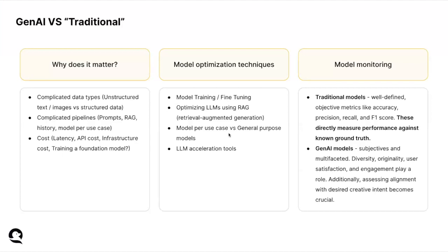There are also differences in model optimization techniques. With traditional models, you usually train from scratch or fine-tune a pre-trained model. With generative models, it changes — you can train or fine-tune, but there are other techniques like RAG, retrieval-augmented generation, where you use your own private data to give the right context to a model. Another consideration is choosing the right model for your use case — do you really need a general-purpose model, or can you use a smaller model trained for your specific use case? Can you accelerate your model?